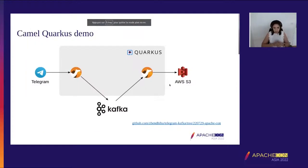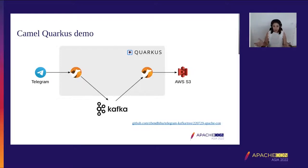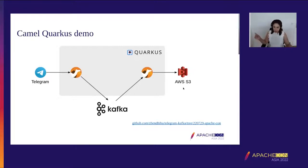Now let's go to the demo. For our Quarkus demo, we will have two routes: one route that does a Telegram chatbot, gathers feedback from Telegram user messages, and pushes those messages into a Kafka broker. Then a second route that consumes those messages from Kafka and puts them in an S3 bucket.